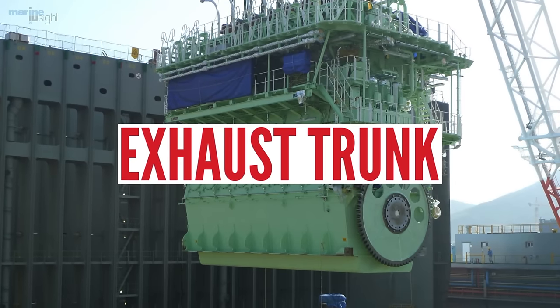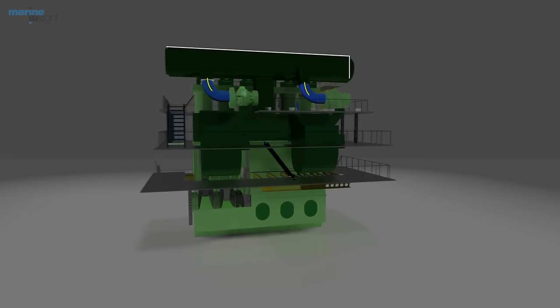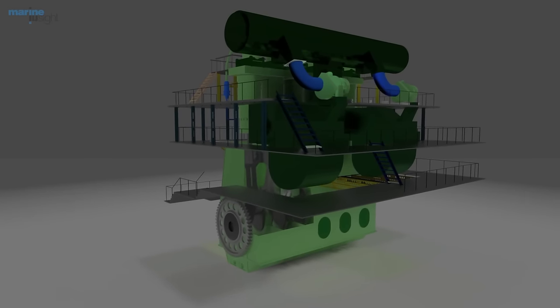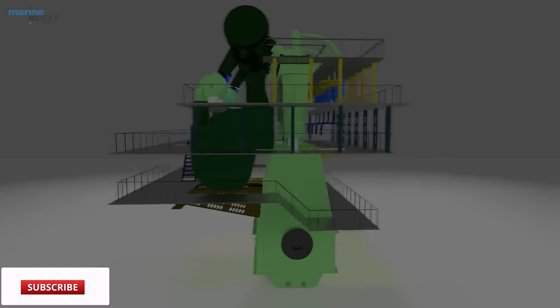Exhaust trunk: The exhaust drawn out of the exhaust valve is then transferred to the exhaust trunk from where it strikes the turbine blades of the turbocharger for heat recovery. It is located in between the cylinder head and turbocharger unit. So these are the basic components which can be seen from outside of the engine.